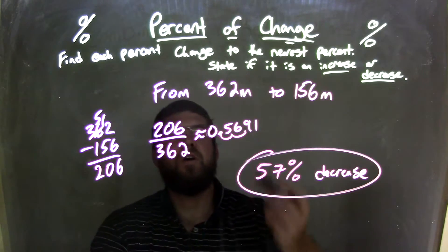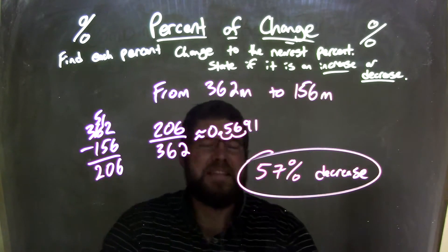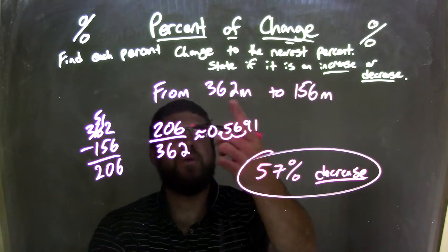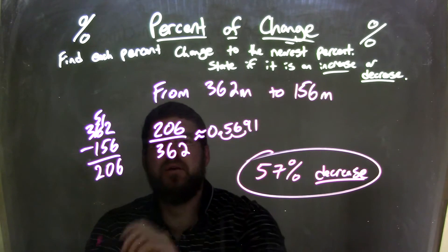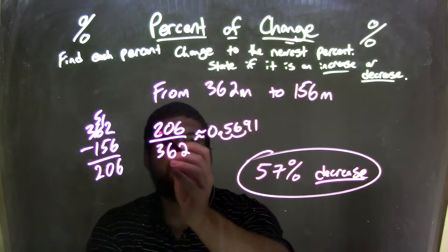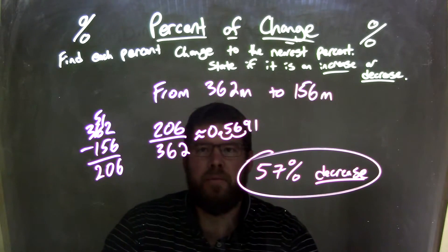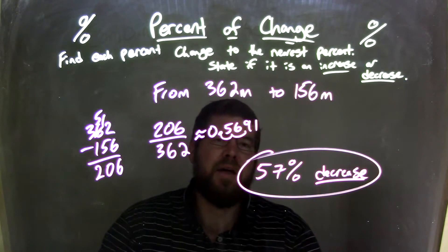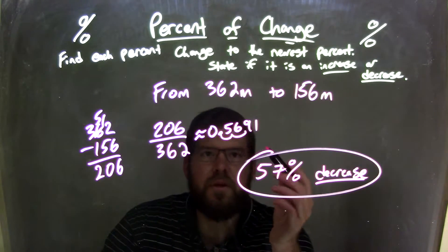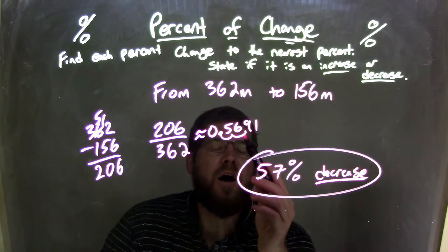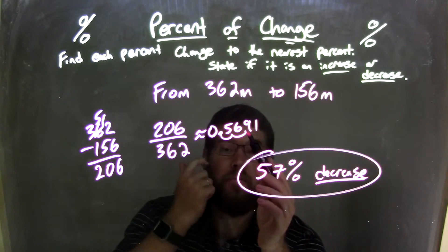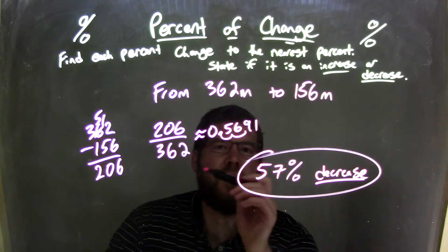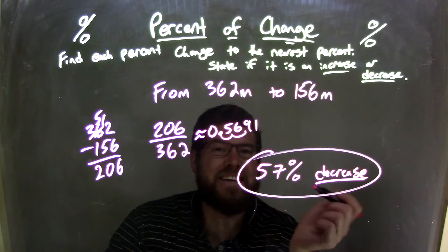So let's recap. We started with a problem of 362 meters to 156 meters. We knew that was a decrease. From that, I found the difference between these two numbers, subtracted them here, got 206. I took that number 206, divided it by my first number where I started from, and that got me a decimal, approximately 0.5691. I then knew that if I move the decimal point over two positions, we have 56.91, and then we need to round that. That nine causes six to round up to a seven, and so we have a final answer of 57 percent decrease.